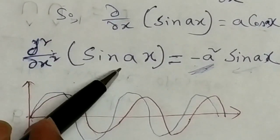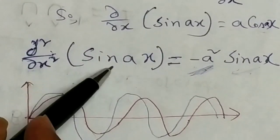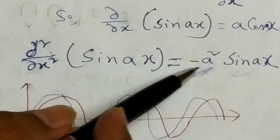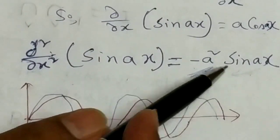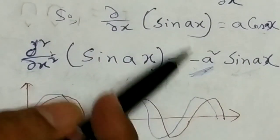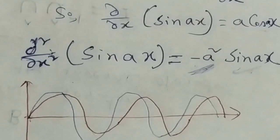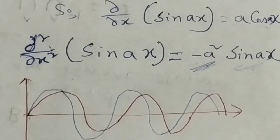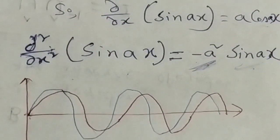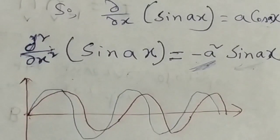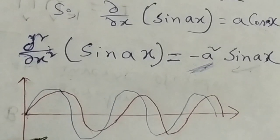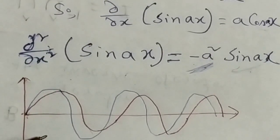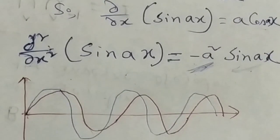Taking another example: if del²/del-X² is the operator and sine(aX) is the wave function, then differentiating gives minus a²·sine(aX), where sine(aX) is the eigenfunction and minus a² is the eigenvalue. A function is said to be an eigenfunction corresponding to an operator if its form remains invariant under the operation, with only the appearance of a constant multiplicative factor — this factor is called the eigenvalue.